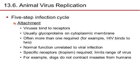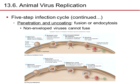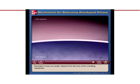Animal virus reproduction involves a basic infection cycle. Viruses bind to receptors — glycoproteins on the cytoplasmic membrane — and often more than one receptor is required. For example, HIV binds to two different receptors. Specific receptor tropism limits the range of the virus; for example, dogs do not contract measles from humans. Some viruses are crossing over — one virus affecting dogs and cats is showing crossover to humans, so viruses can mutate and change their host. The next step is penetration and uncoating via fusion or endocytosis, where the genome is pushed into the cell.